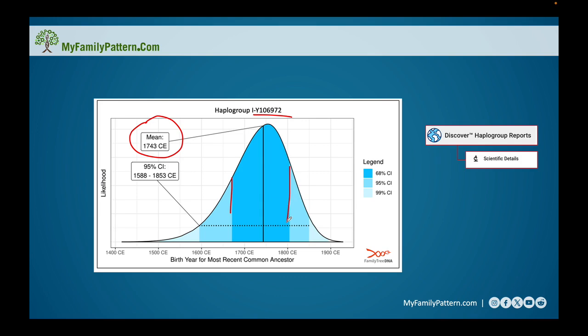The scientists at Family Tree DNA have constructed algorithms based on sound scientific evidence to look at and say, based off of the margin of error, that common ancestor, that time to most recent common ancestor for my haplogroup was likely born around 1743.